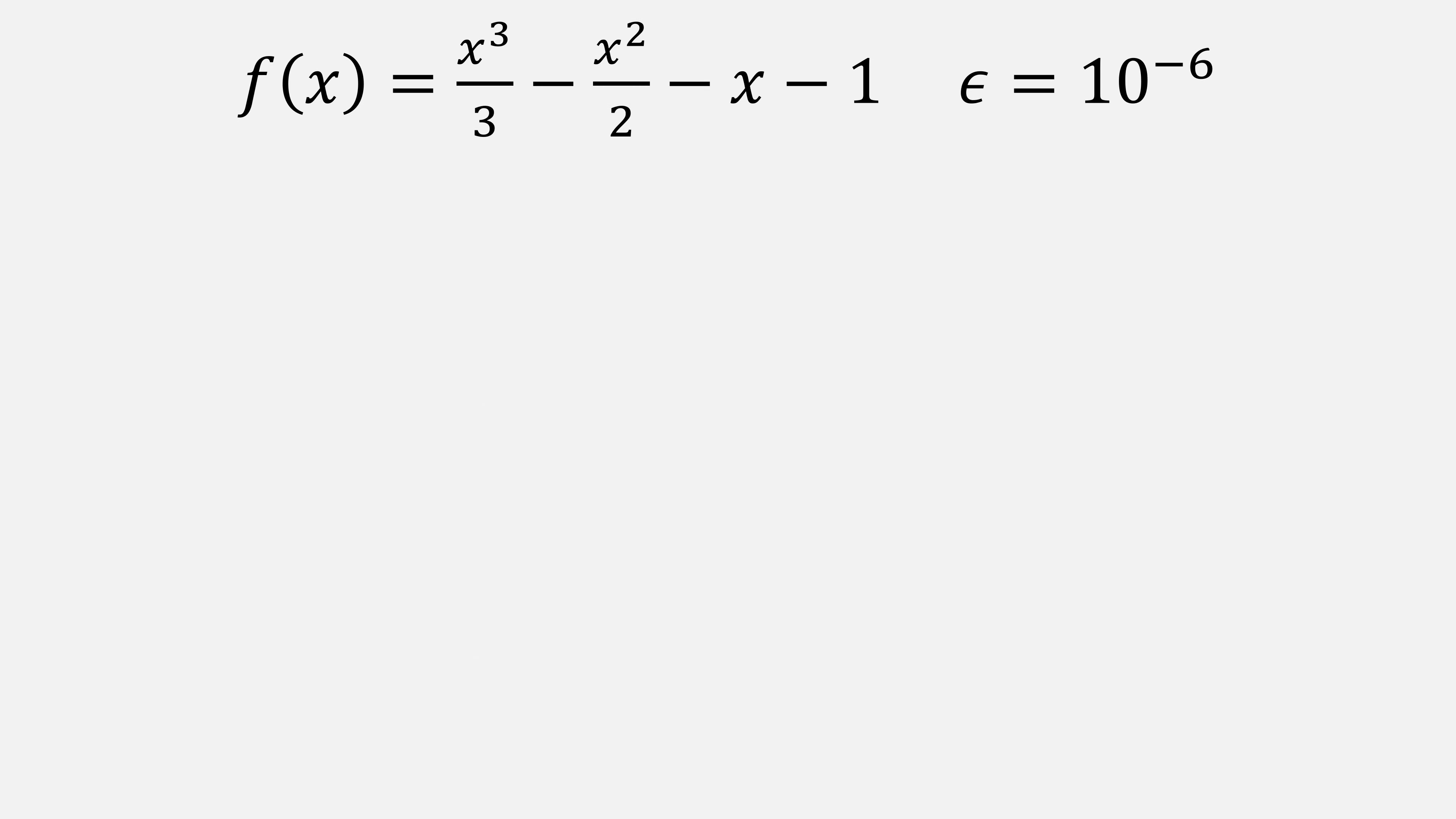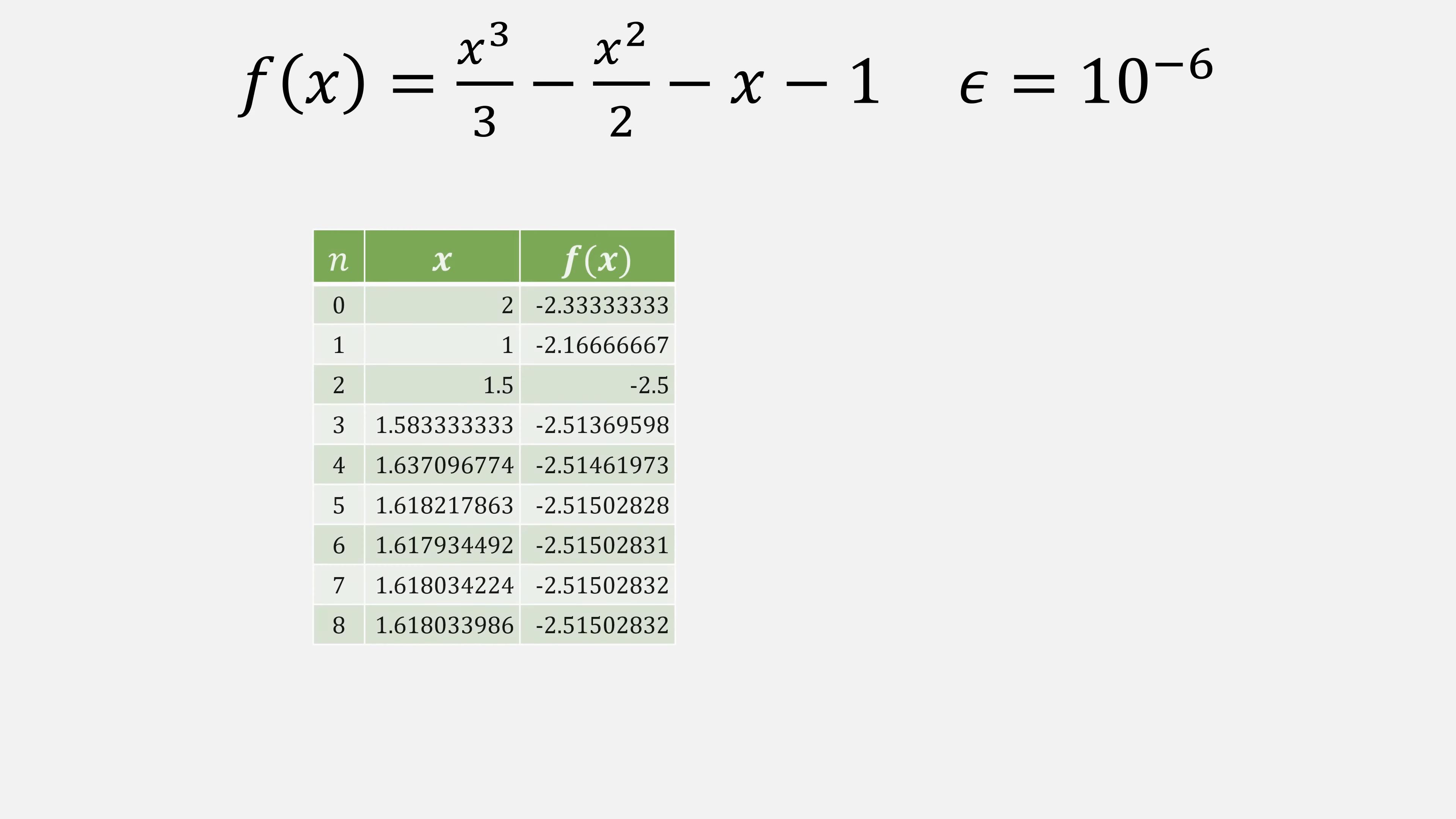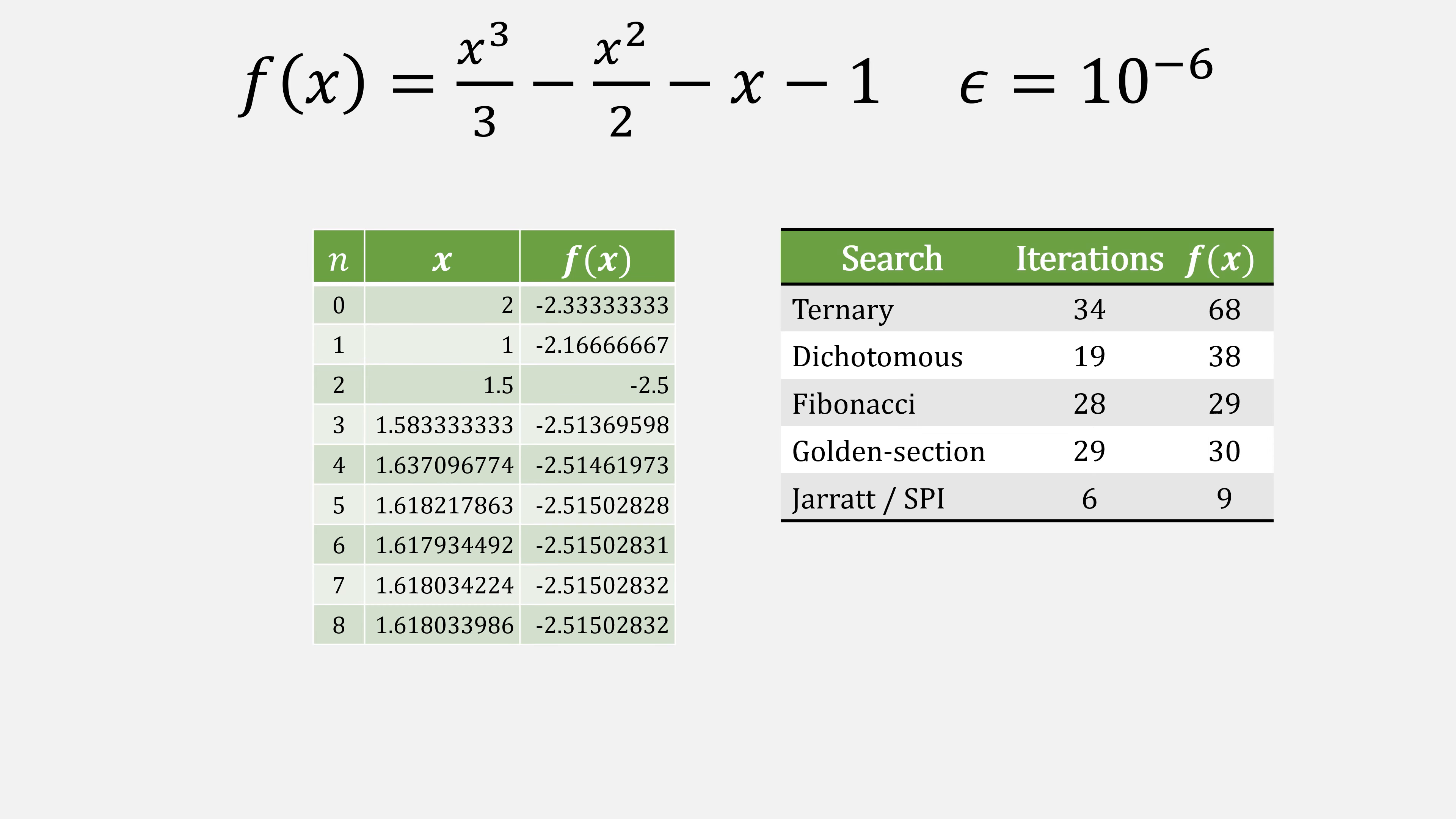Let's apply Jarratt's method to the function x cubed over 3 minus x squared over 2 minus x minus 1, with an ending epsilon 10 to the minus 6. Starting with the points 2, 1, and 1.5, you'll notice that this converges very quickly. In fact, it's much faster than any of the methods that we've talked about so far. In fact, Jarratt proves that this method is super linear with an order of 1.325.